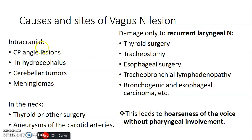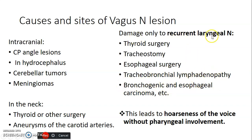Sites of lesion of the 10th cranial nerve include cerebellopontine angle lesions, hydrocephalus where nerves will be compressed, cerebellar tumors, meningiomas, tumors of the meninges. In the neck, a mass of the thyroid or during surgery of the thyroid can injure the nerve. Since the nerve is in the carotid sheath, aneurysms of the carotid arteries can affect the vagus nerve. You can also damage the recurrent laryngeal nerve during surgeries in the neck such as thyroid surgery, tracheostomy, esophageal surgery, or tracheobronchial lymphadenopathy — when lymph nodes are enlarged due to cancer of the bronchi or esophagus, they can compress the recurrent laryngeal nerve.